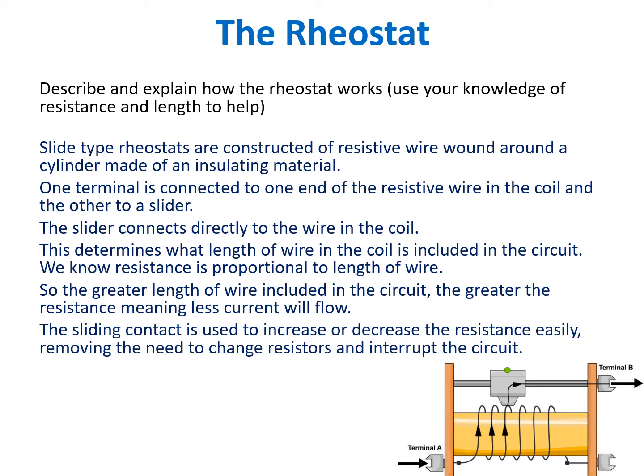We know resistance is proportional to the length of the wire, so the greater the length of wire included in the circuit, the greater the resistance, meaning less current will flow. The sliding contact is used to increase or decrease the resistance easily, removing the need to change resistors and interrupt the circuit.